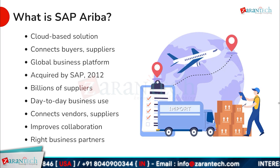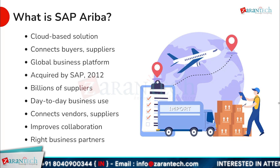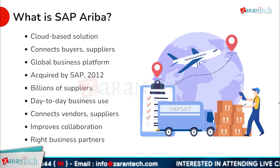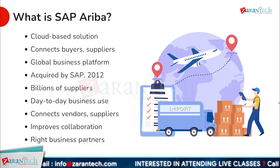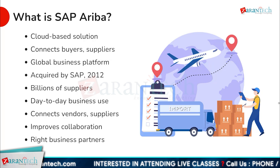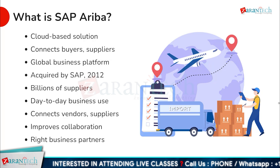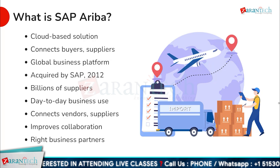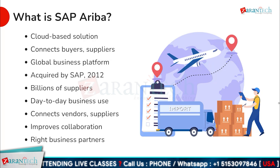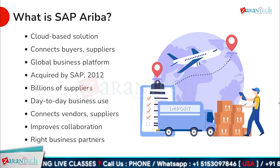SAP Ariba is a cloud-based solution that connects buyers and suppliers on a global business platform. It was acquired by SAP in 2012 and has since become a leading platform for procurement and supply chain management. SAP Ariba boasts a network of billions of suppliers, making it an essential tool for day-to-day business use. The platform connects vendors and suppliers, improves collaboration, and helps businesses find the right partners to work with.